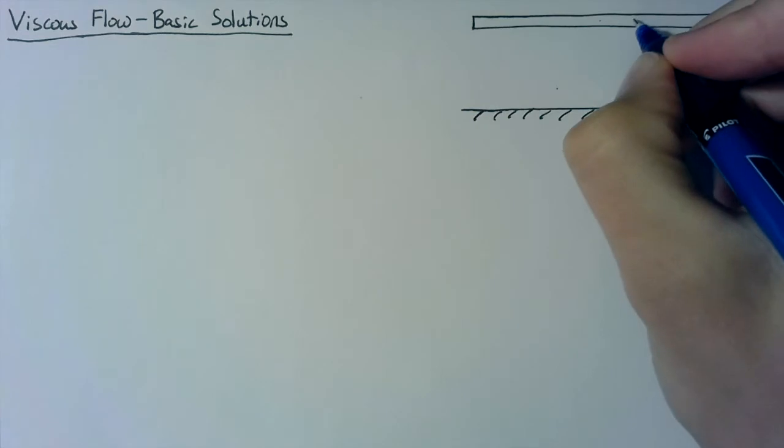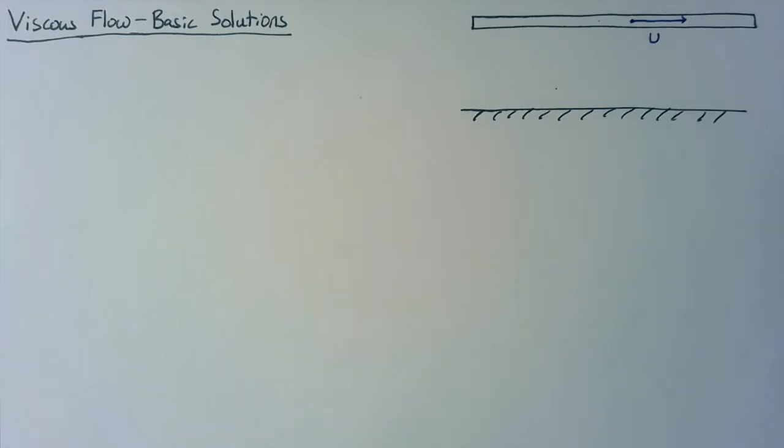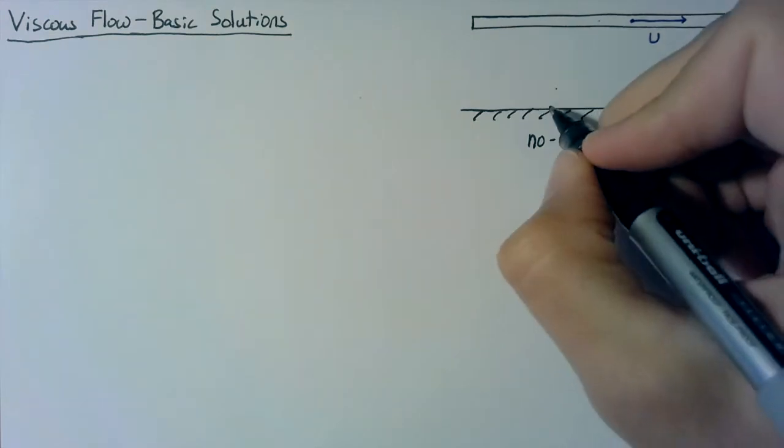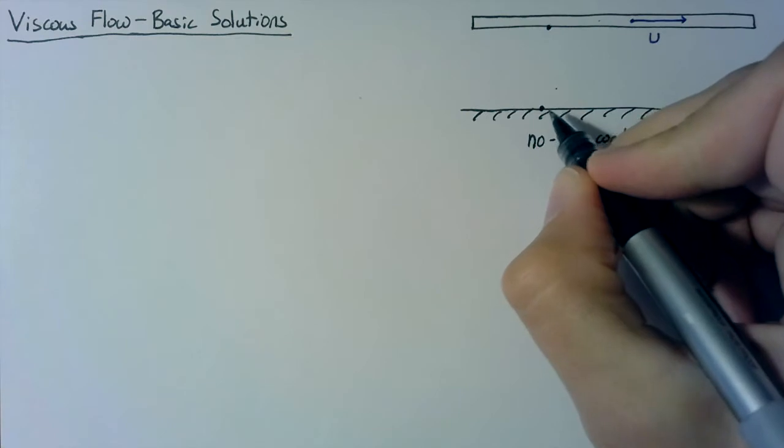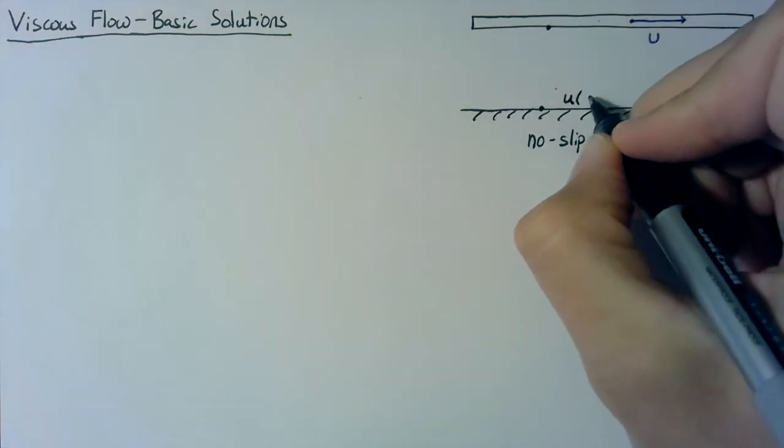And for this first case, we're going to say that our top plate is moving with some velocity u, but our bottom plate is held constant. For ideal flow, we wouldn't actually care about how these plates are moving because it wouldn't have any effect on our flow field. But we have an additional boundary condition once we start talking about friction. And that condition is called the no-slip condition. All it says is that if you look at the surface of our plates here, the fluid at that exact point can't slip along the surface.